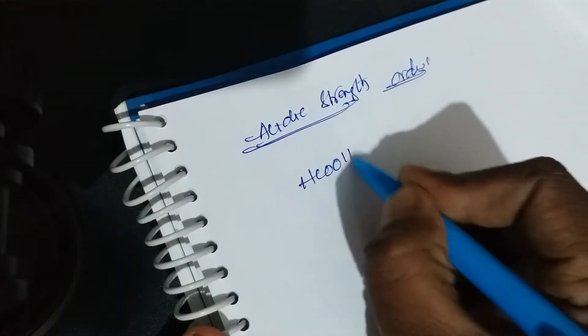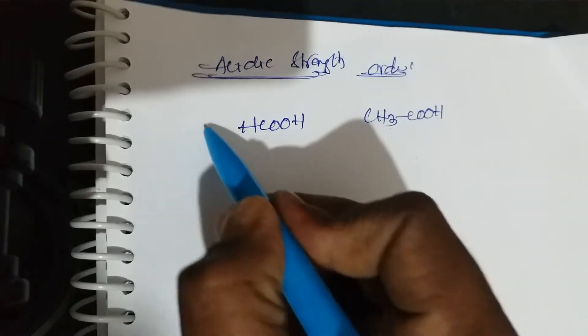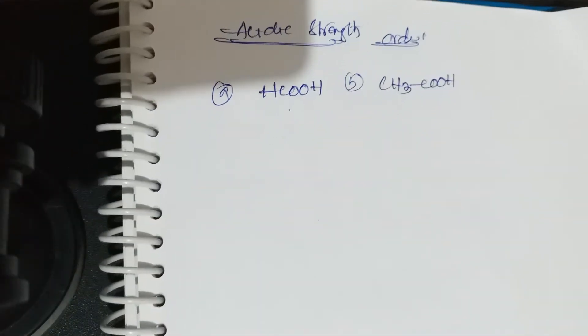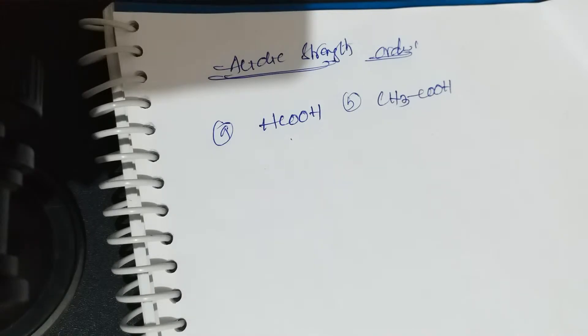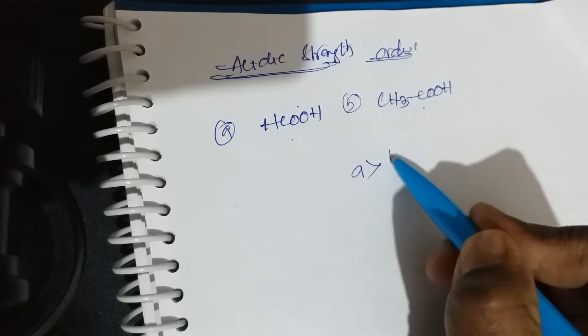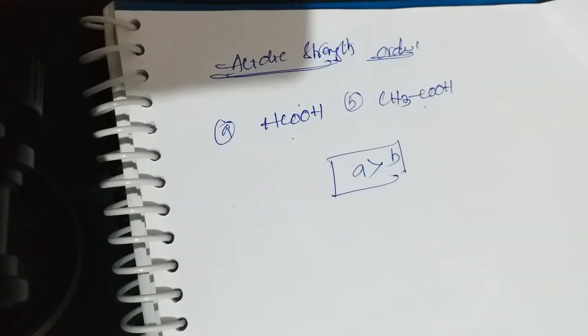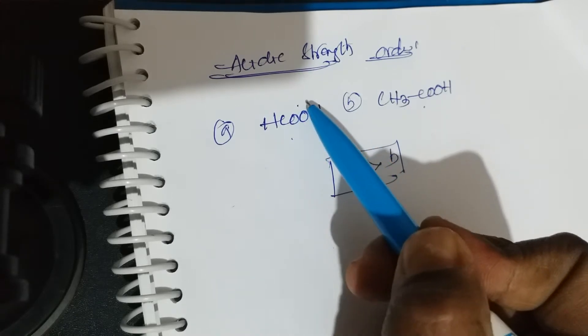Let us discuss the first factor: acidic strength. The acidic strength order — first example: HCOOH (formic acid) is given as A, and CH₃COOH (acetic acid) is given as B. Out of these two, which one is more acidic? An acid is a substance which gives H⁺ ions. Which of these two is the better acid?